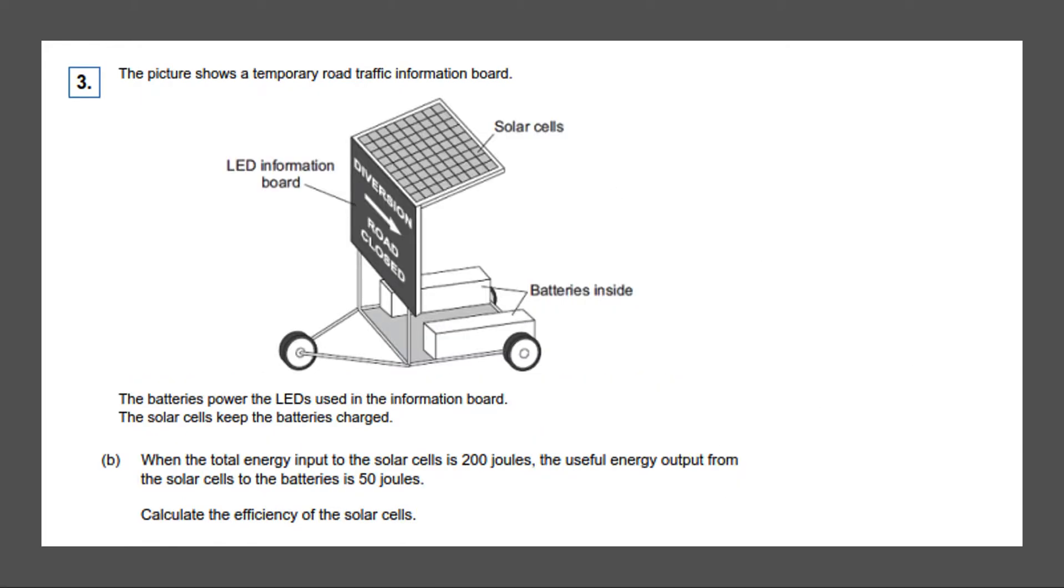Next question. The picture shows a temporary road traffic information board over here. The batteries power the LEDs used in the information board, the solar cells keep the batteries charged. When the total energy input to the solar cells is 200 joules, the useful energy output from the solar cells to the batteries is 50 joules. So we can calculate the efficiency of the solar cells.